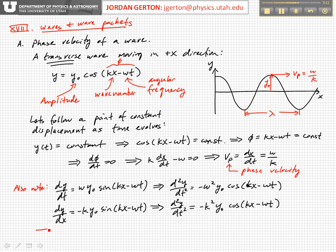So, 1 over k squared times the second derivative with respect to x squared is equal to 1 over omega squared times the second derivative with respect to t squared.